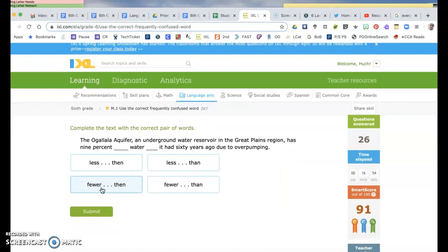The Ogallala Aquifer, an underground water reservoir in the Great Plains region, has 9% less water than it had 60 years ago. Then and than. This one means to compare. I have more shoes than Mr. Hutch. This one means like in time. So I'm going to use this one.